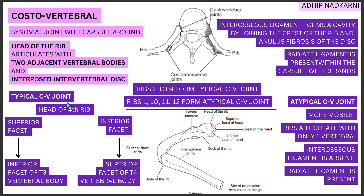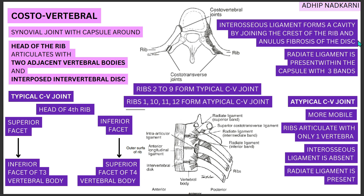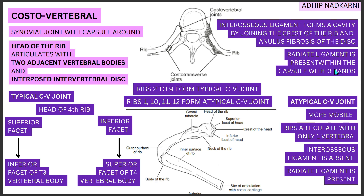The atypical costovertebral joint is more mobile compared to the typical one because the rib articulates with only one vertebra, giving more range of motion. The radiate ligament is present, but the interosseous ligament — normally present in the typical joint — is absent. In the typical costovertebral joint, the interosseous ligament joins the crest of the rib and the annulus fibrosus of the disc, and the radiate ligament has three bands: superior, intermediate, and inferior.